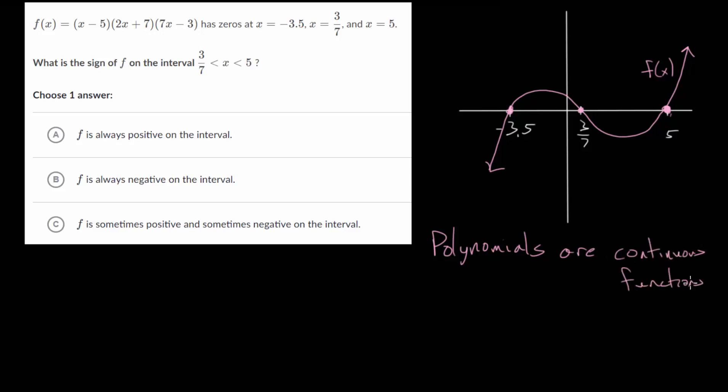So they don't have any breaks, they don't have any jumps. And because of that we can figure out different properties between the zeros. Essentially between two zeros the polynomial function is either always positive or always negative. It's not going to be both between two consecutive zeros.